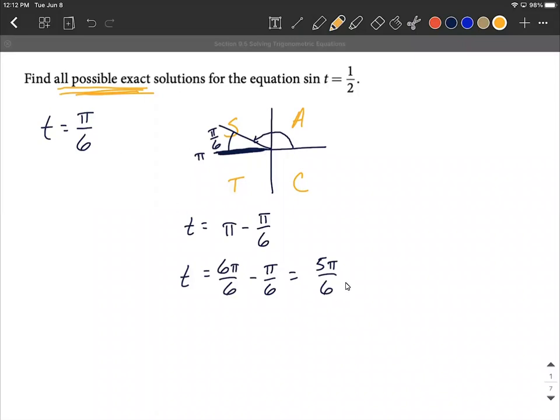How we account for that is we want to add to our solutions plus the period of sine, which is two pi, multiplied by some integer k. So k is going to be some positive or negative whole number. It could be zero as well.